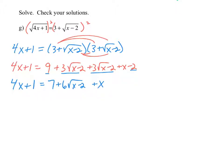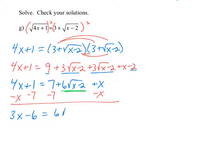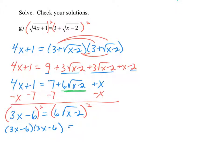Now we want to isolate the remaining radical. We subtract x from both sides and subtract 7 from both sides. On the left side, 4x minus x is 3x, and 1 minus 7 is minus 6, giving us 3x minus 6. On the right side, we have 6 times the square root of x minus 2. Now we square both sides again with the radical isolated. The left becomes 3x minus 6 times 3x minus 6, and the right is 36 times x minus 2.